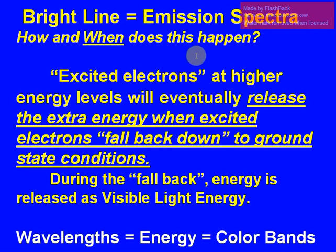The bright line spectra or emission spectra, it's important to know how and when this occurs. So again, the excited electrons are at higher energy levels. They will eventually release the extra energy when excited and fall back down to the ground state. So if they're losing energy, they have the ability to release light in the visible light range of those color bands. And again, those wavelengths represent a certain amount of energy, which give you a specific color.